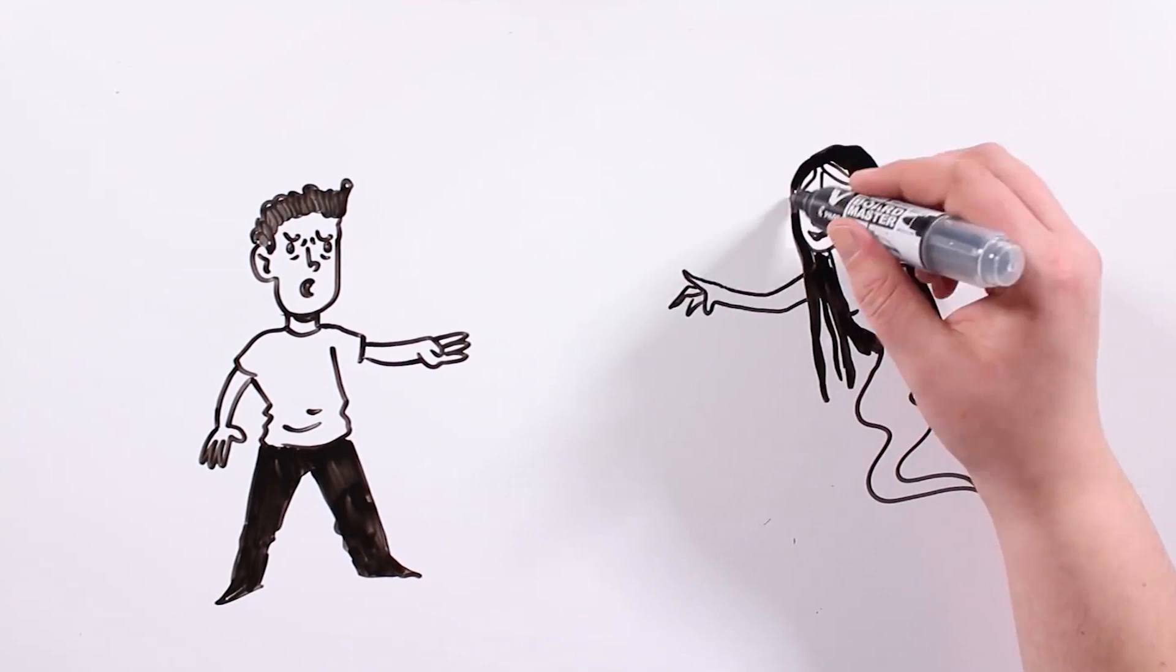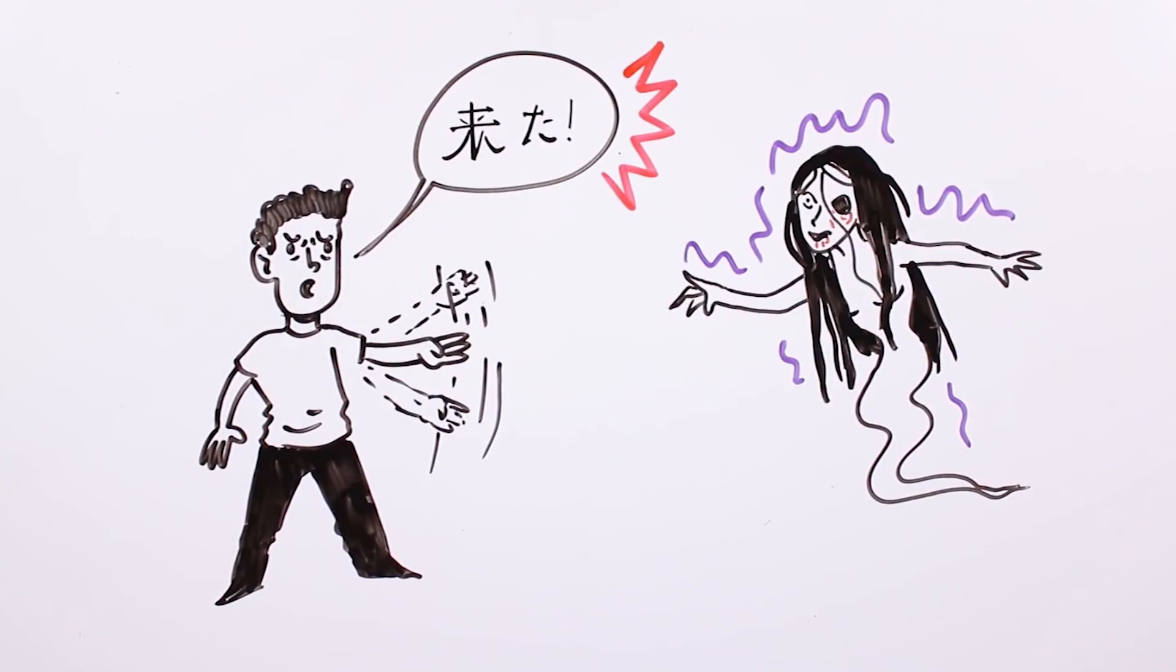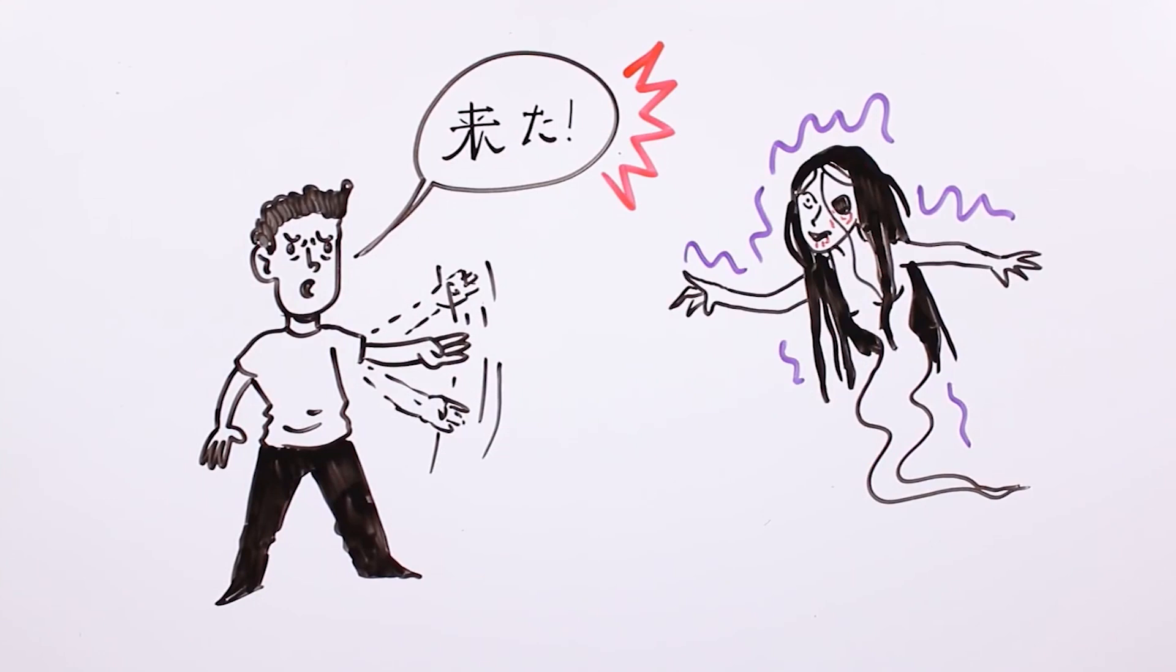You must turn to Daruma, look at her, and yell KITA, which means I found you in Japanese, while you raise your hand and move it up and down, similar to a karate chop. If you have done it correctly, you will have won.